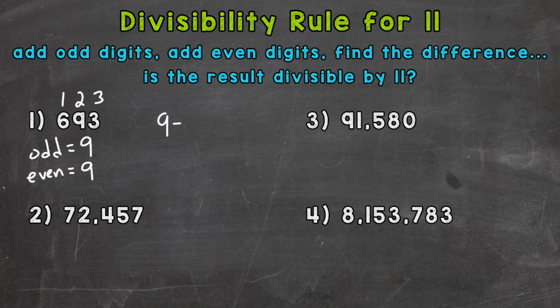So let's find the difference. 9 minus 9 equals 0. So this is our difference, and we need to see if that is divisible by 11. 0 is divisible by any number, therefore it's divisible by 11. Since our result is divisible by 11, that means our original number, 693, is divisible by 11 as well.